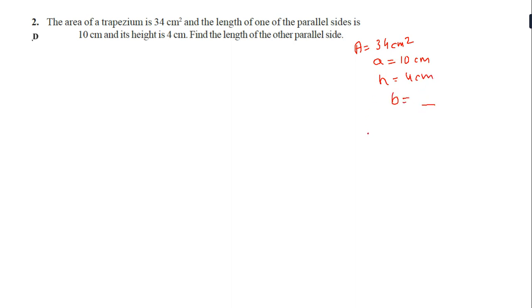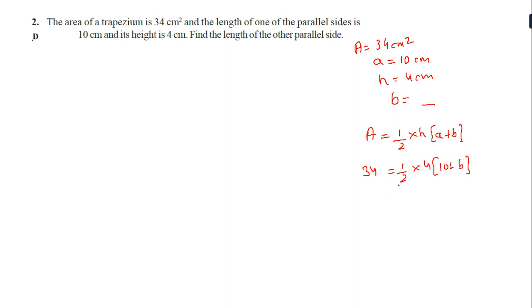Now we have to first write the formula: 1 by 2 into h in bracket (a plus b). Here the area 34 is given, height is also given, and one side is also given. So we get 17 is equal to 10 plus b, therefore b is equal to 7.